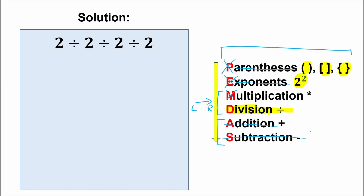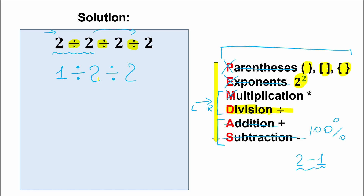From left to right, let's solve it. We have the first, second, and third division signs. The first division sign from left to right: 2 divided by 2 equals 1. A lot of students stop here, jumping ahead, but we need to rewrite the expression: 1 divided by 2, divided by 2. Now we scan again — what is the first sign from left to right? This sign comes first, so 1 divided by 2 is our next step.